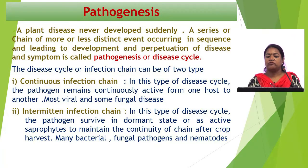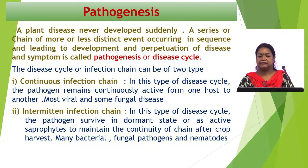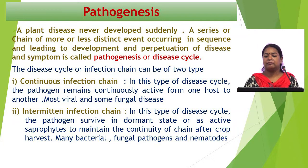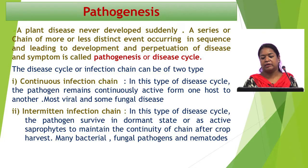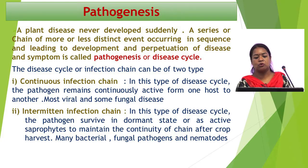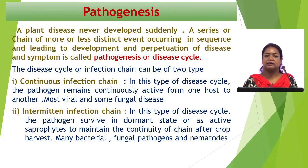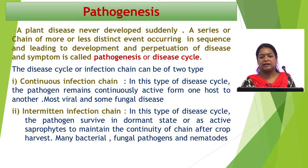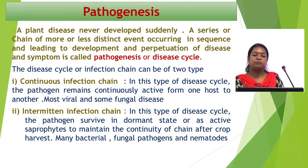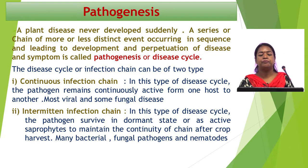What is the meaning of pathogenesis? As we know, plant disease never develops suddenly but a series or chain of more or less distinct events occurring in a sequence and leading to development and perpetuation of disease and symptoms is called pathogenesis or disease cycle.